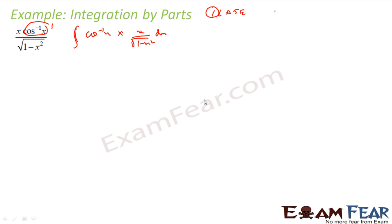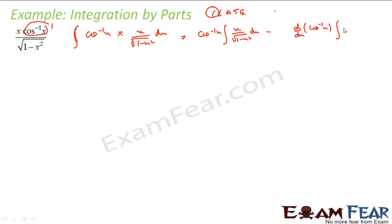Let's proceed. By integration by parts, this is nothing but cos⁻¹(x) · ∫x/√(1−x²) dx, minus ∫[d/dx of cos⁻¹(x) · ∫x/√(1−x²) dx] dx.